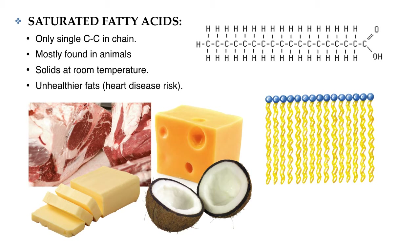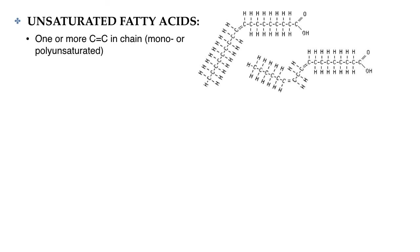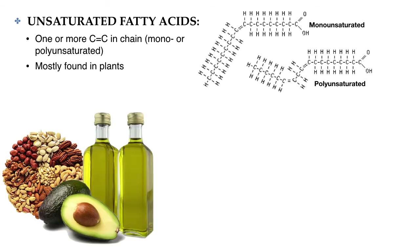Unsaturated fatty acids have at least one carbon-to-carbon double bond in the hydrocarbon chain. Monounsaturated fatty acids have only one double bond, and polyunsaturated fatty acids have more than one. Unsaturated fatty acids are mostly found in plant sources like oils, such as olive oil.